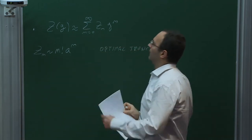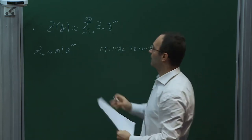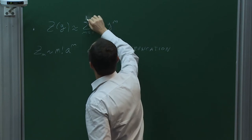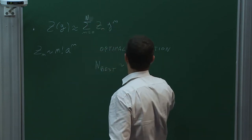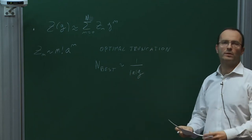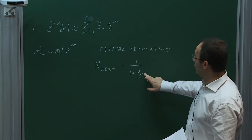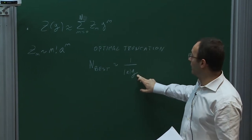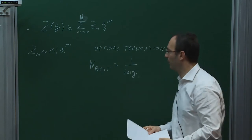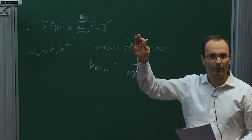With optimal truncation, you find via a trivial Stirling formula that the best value n_best at which to truncate the sum is of order 1/(|a|·g). At a given coupling and theory, there is a best number of loops after which results get worse. When the coupling is very small, n_best is very large, so you can reliably use perturbation theory to many orders. In QED we don't worry about this asymptotic nature — we have to worry about other things.